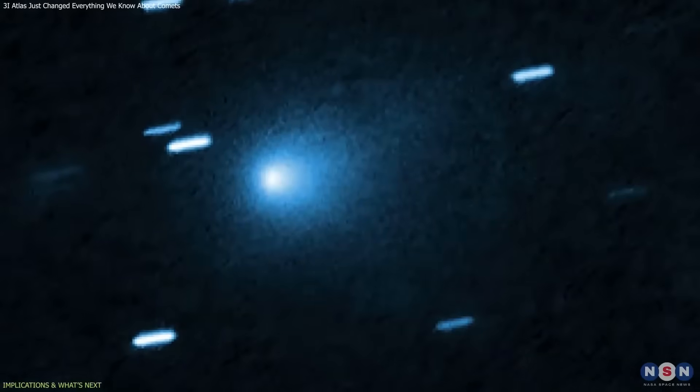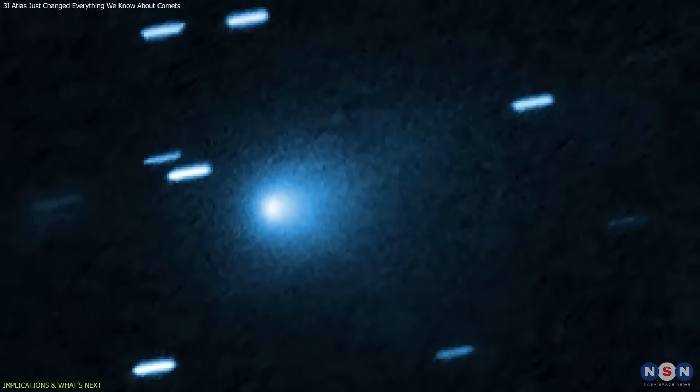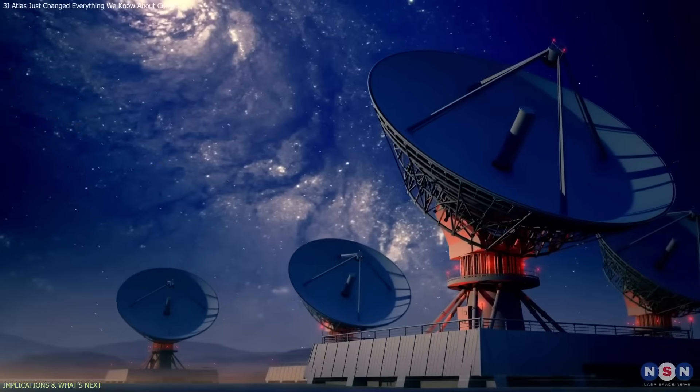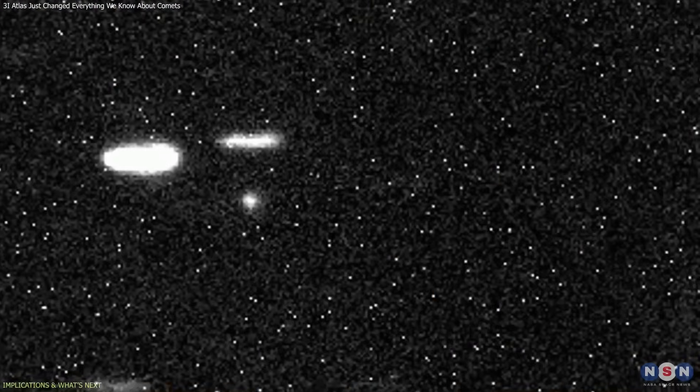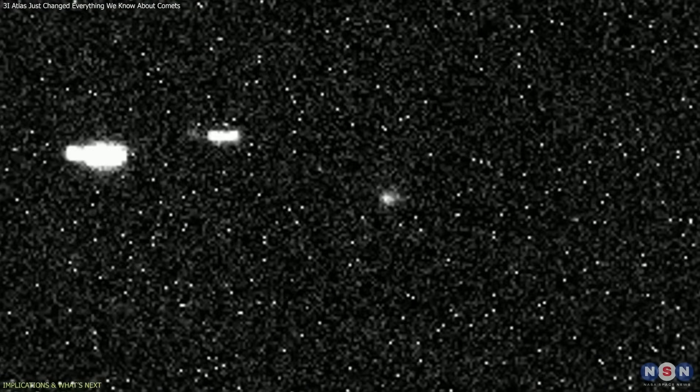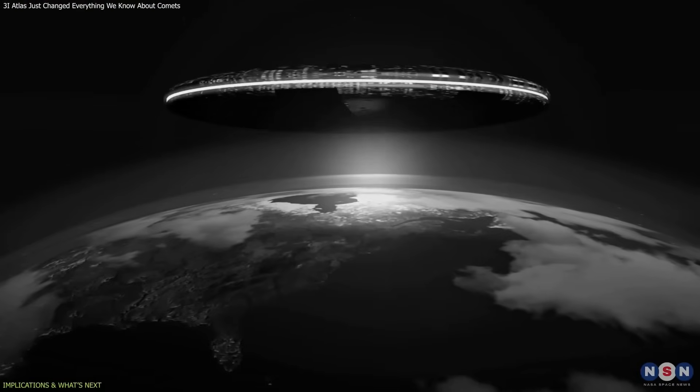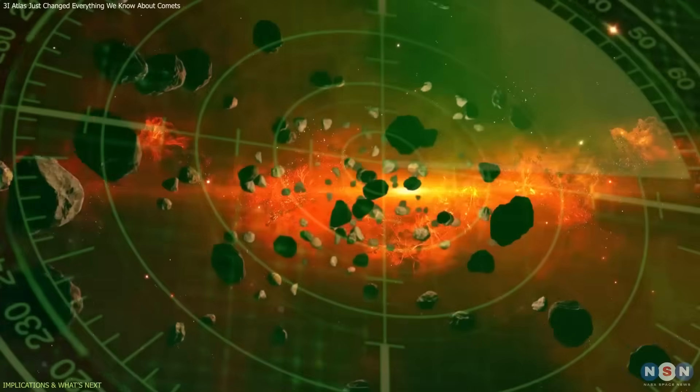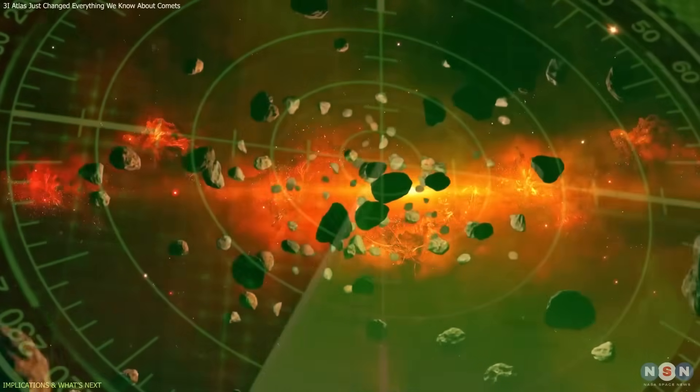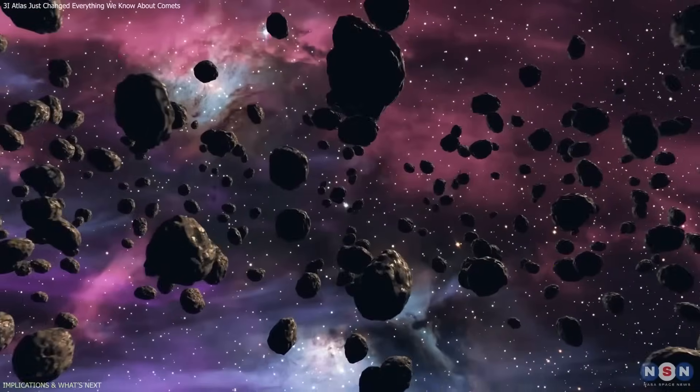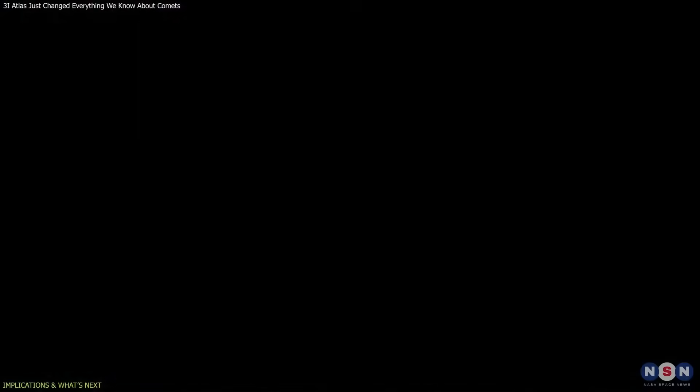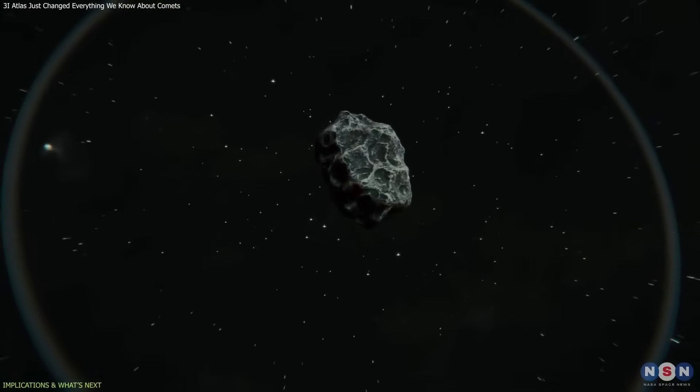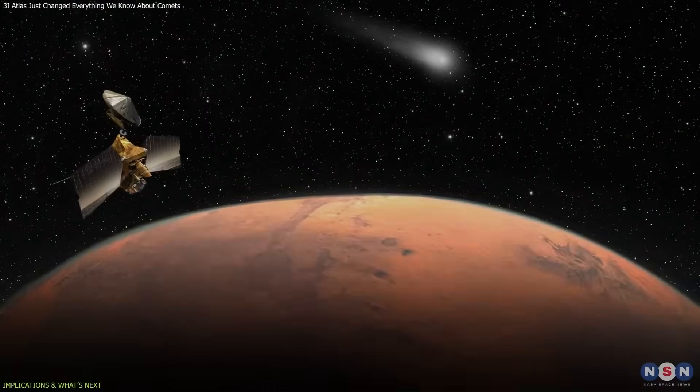3I/ATLAS will be compared with comets and asteroids from our own solar system. Scientists hope differences in chemical composition, structure, and behavior reveal how planetary systems elsewhere form and evolve. Each spectrum, each image, adds a piece to the puzzle, helping humanity map the diversity of worlds beyond our sun.